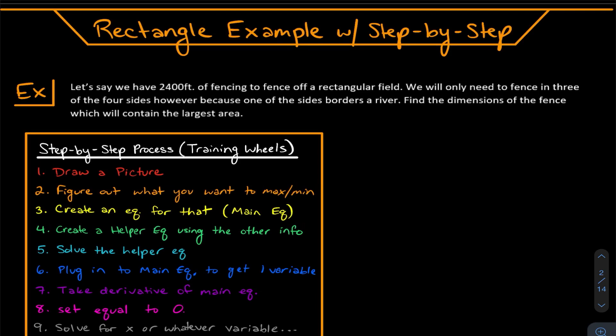Let's get into the first example. We have 2400 feet of fencing to fence off a rectangular field, but only three of the four sides need fencing because one side borders a river. We need to find the dimensions that will contain the largest area. So we're trying to maximize area — we'll write an area equation, take a derivative, set it equal to zero, find the critical points, and we're done.